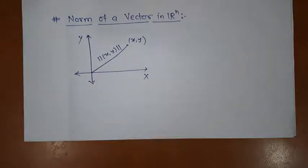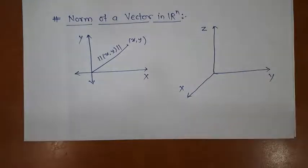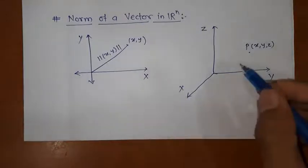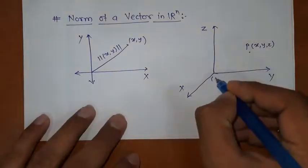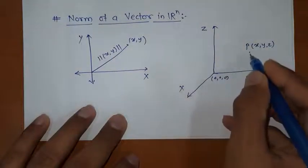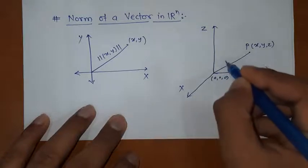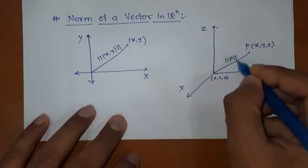This is called norm in Rn. Now let us see R3. In R3 we have three axes: x-axis, y-axis, and z-axis. If I consider any point P having coordinates (x, y, z), then the distance of that point from the origin — this is the origin (0, 0, 0) — that distance is known as the norm of that point.